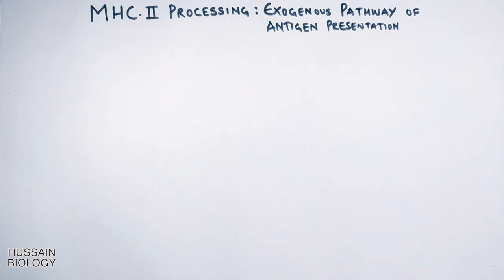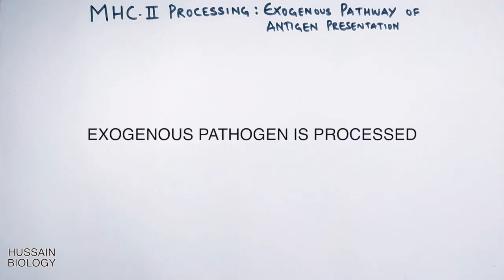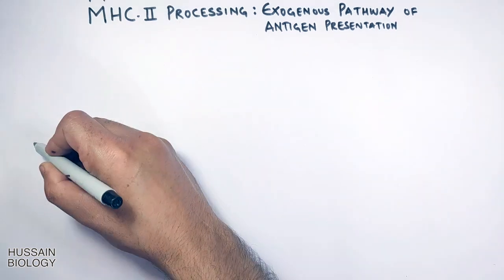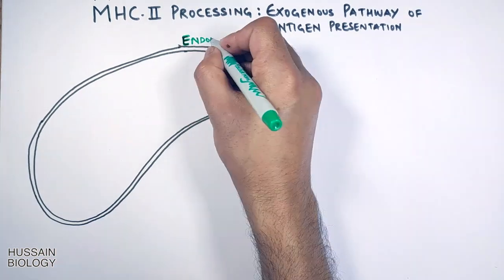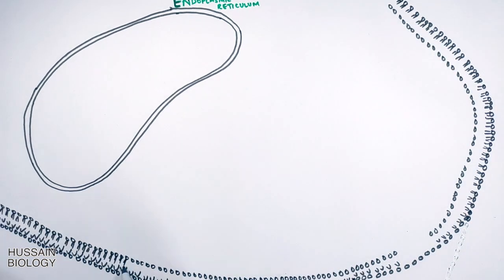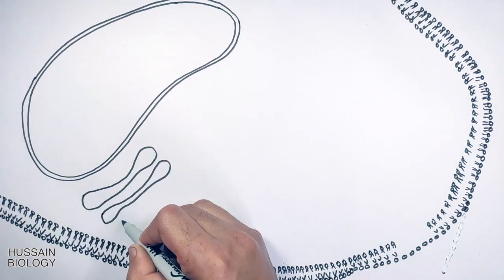In the exogenous pathway of antigen presentation, the exogenous antigen or pathogen is processed within the cell and then presented towards the T cell by the help of MHC-II molecule. Here in this pathway we see we have endoplasmic reticulum surrounded by plasma membrane as shown in the diagram and we also have Golgi apparatus.